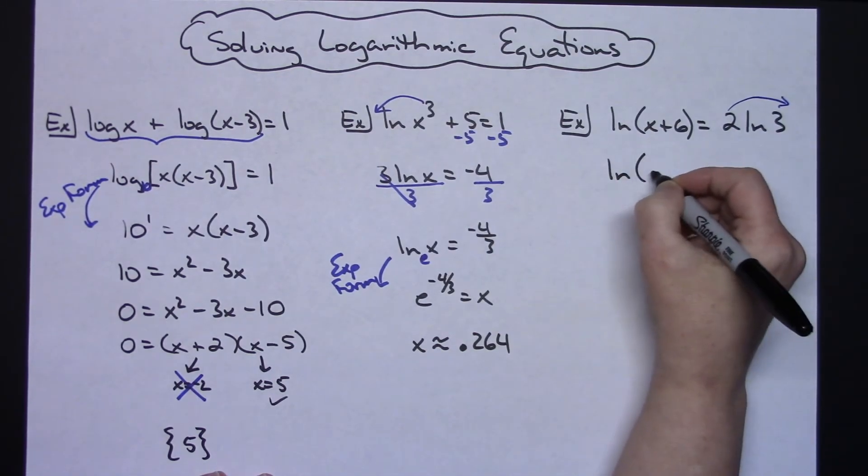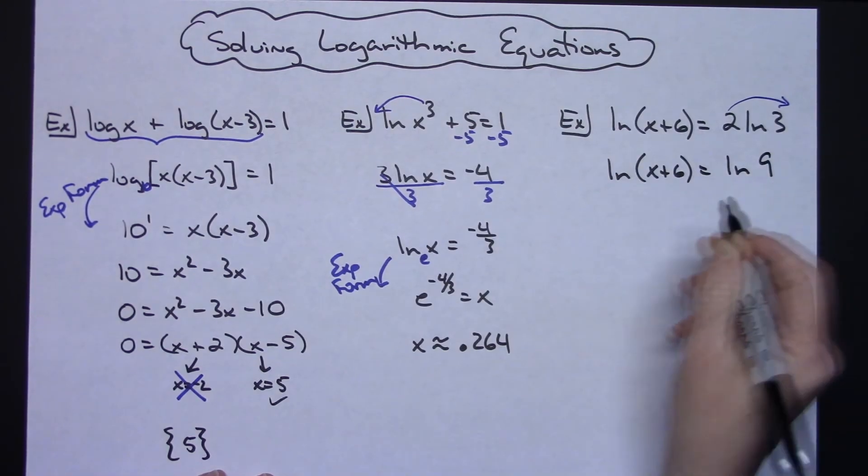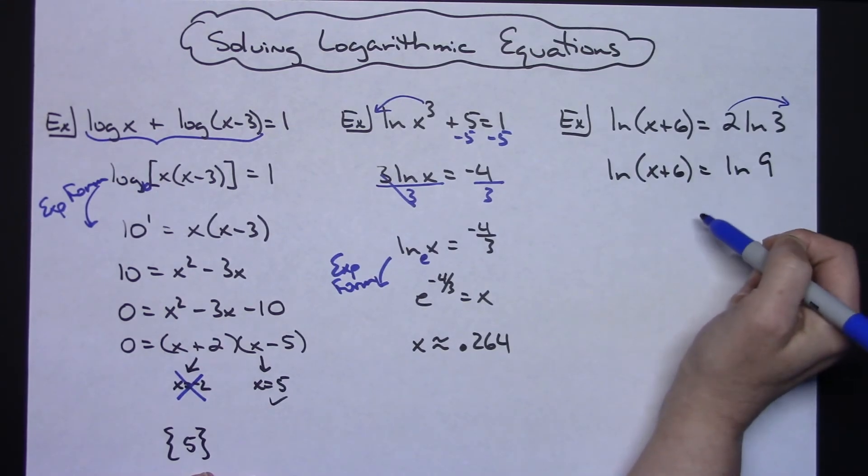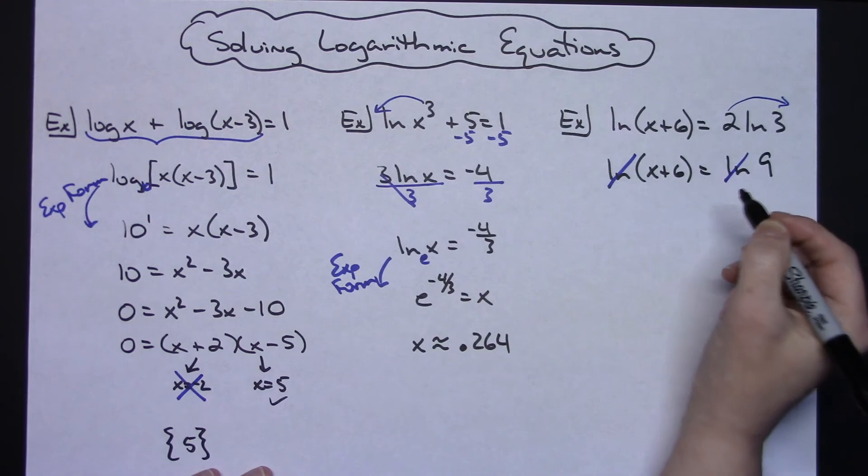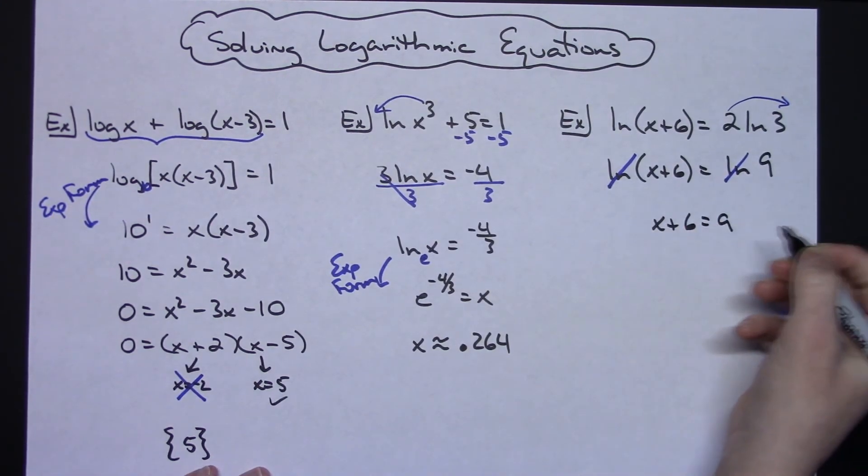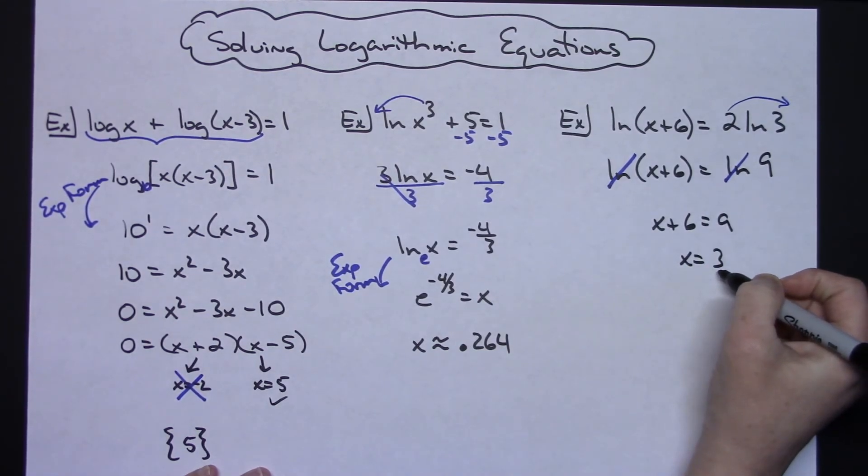Now we've got a property that says if I've got a log with the same base on both sides of the equal sign, then I can cross those two logs off. Then I would have an X plus 6 equals 9. Subtracting 6 from both sides, X equals 3, and then again you're going to want to check that in your answer there.